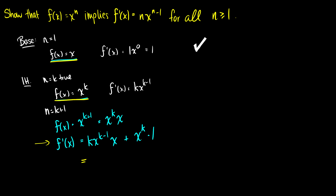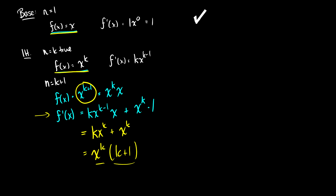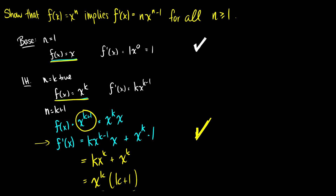So continuing: kx^(k-1) times x is the same as kx^k, and we add x^k times 1, which is just x^k. Factoring out x^k, we get x^k times (k+1). So the derivative of x^(k+1) is (k+1)x^k, which is exactly what we wanted. Therefore the induction hypothesis holds and the power rule is proved by induction.